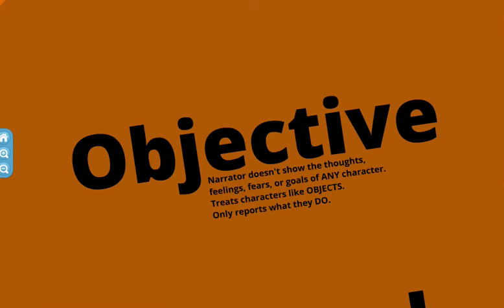Then for our knowledge level, we have three choices: objective, limited, and omniscient. An objective narrator doesn't know the thoughts, feelings, fears, or goals of any character. He treats those characters like they are objects, which is why 'object' is part of 'objective.' It would be like me talking about my lamp on my desk — I can describe what it does, but I can't tell you what it's thinking or how it feels about life. I can only report what it does: the lamp is on, the lamp is off, the lamp falls off my desk. An objective narrator treats all of the characters just like objects and will only tell you what they're doing.